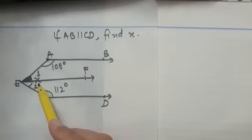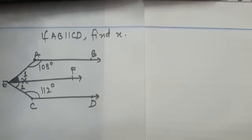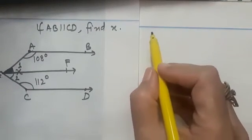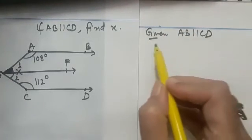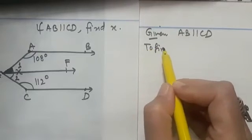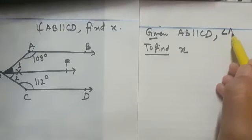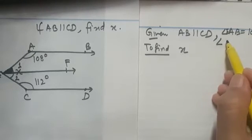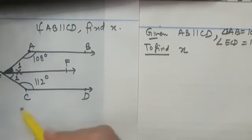Now let us see how to write this in an examination. First, write what is given: AB is parallel to CD, angle EAB is 108 degrees, and angle ECD is 112 degrees. We need to find the value of x.